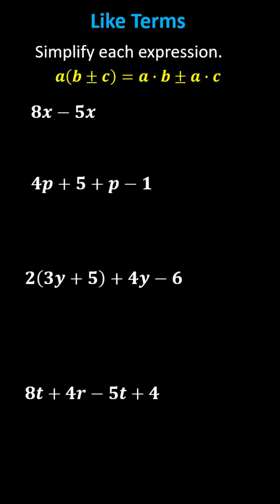Like terms have exactly the same variable factors. In this case, both terms have exactly one factor of x and no other variable factors. Therefore, we can subtract them by subtracting the coefficients. Because 8 minus 5 equals 3, 8x minus 5x equals 3x.